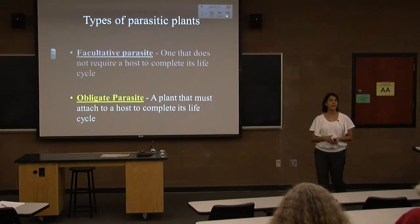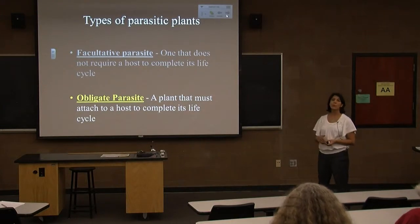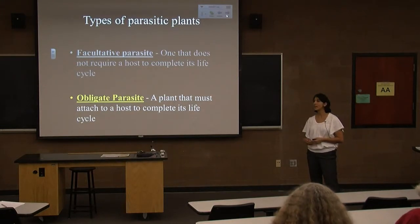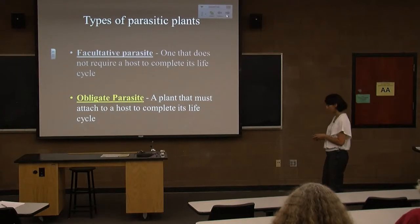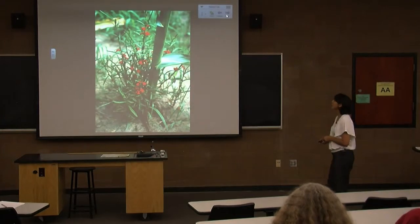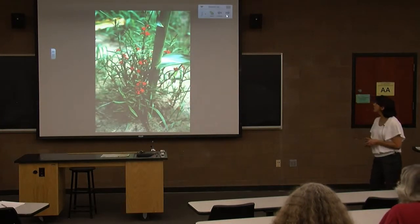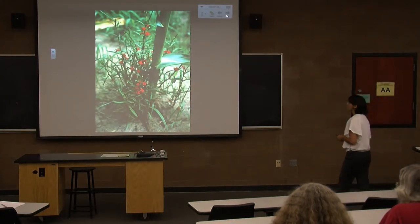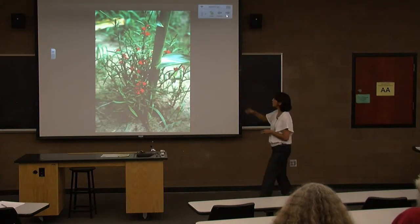And then there's an obligate parasite — one that requires a host to complete its life cycle. There is no picking or choosing; it has to be a parasite. An example is Striga, which is a root parasite of sorghum.